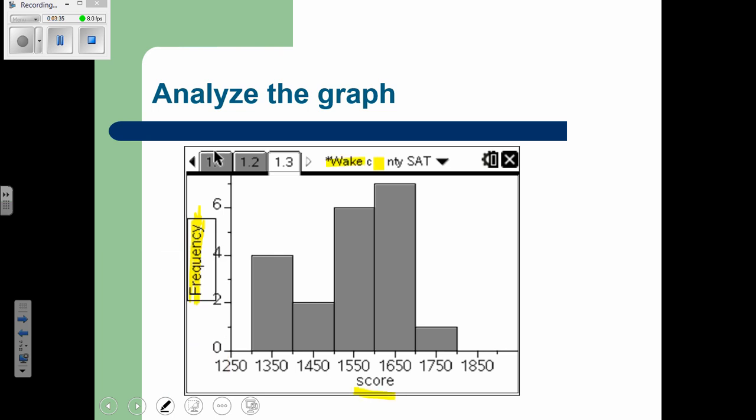And there's a title, Wake County SAT scores. And then at this point, we can start to make some determinations about this. It looks like we might be a little bit bimodal. There's a slight skewness to this thing. It's definitely not symmetric. And it'd be kind of hard at this point, the way that it's breaking down to maybe go into too much detail.